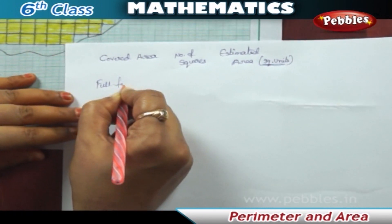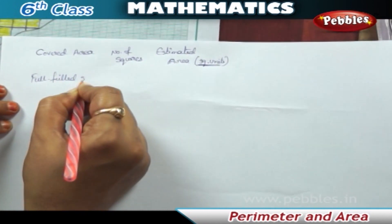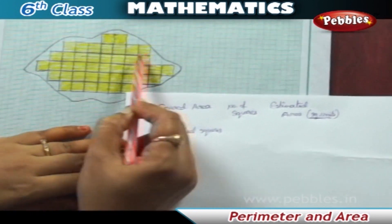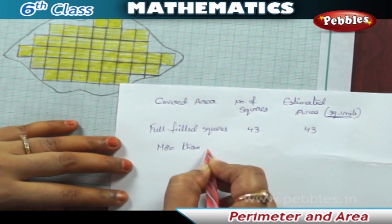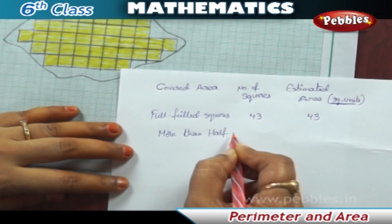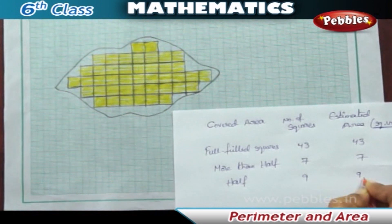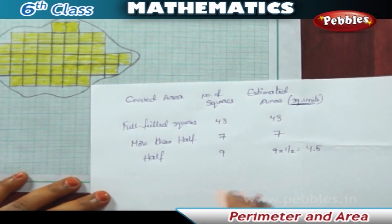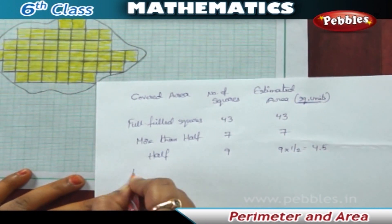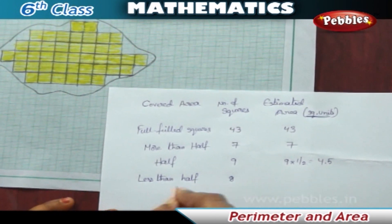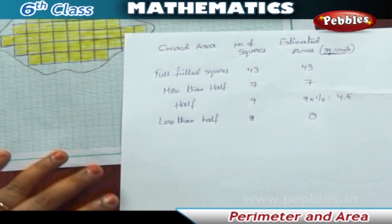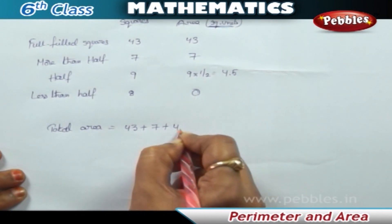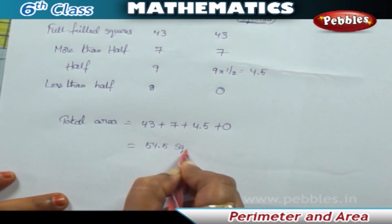We overcome the difficulty by adopting a convention: ignore portions of the area that are less than half a square. If more than half of a square is in the region, count it as one square. If exactly half the square is in the region, take its area as half a square unit. The area of one full square is taken as one square unit.